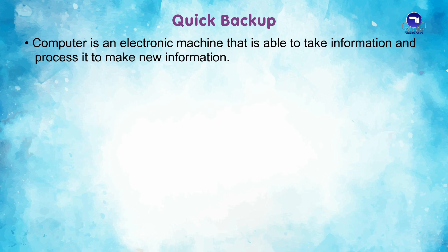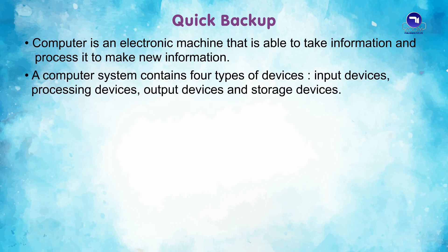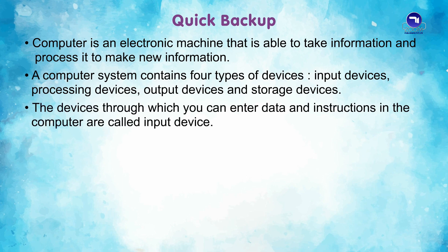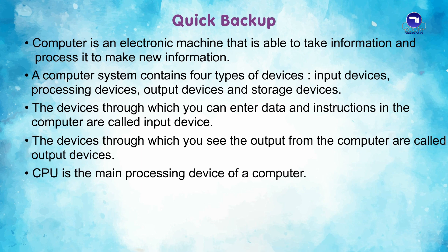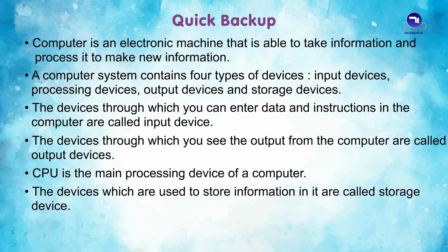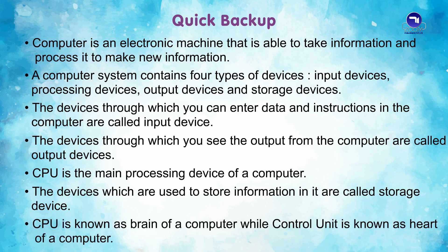Quick Recap: A computer is an electronic machine that is able to take information and process it to make new information. A computer system contains 4 types of devices: input devices, processing devices, output devices and storage devices. The devices through which you enter data are called input devices, and those through which you see the output are called output devices. CPU is the main processing device and is known as the brain of a computer, while the control unit is known as the heart of a computer.